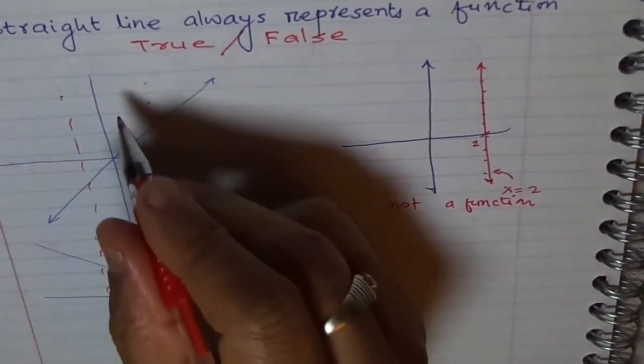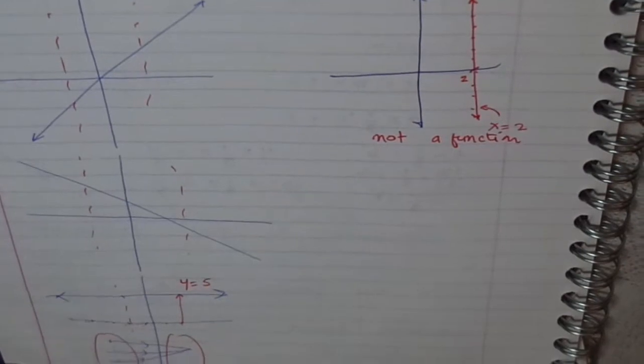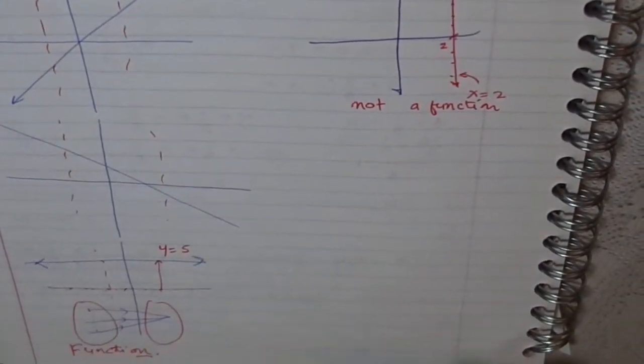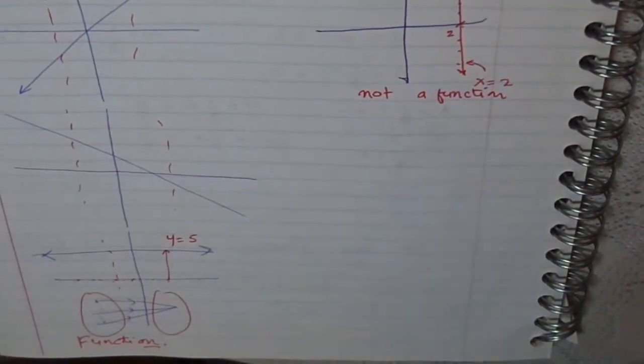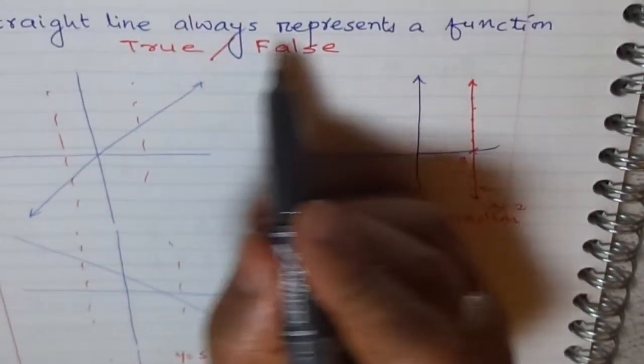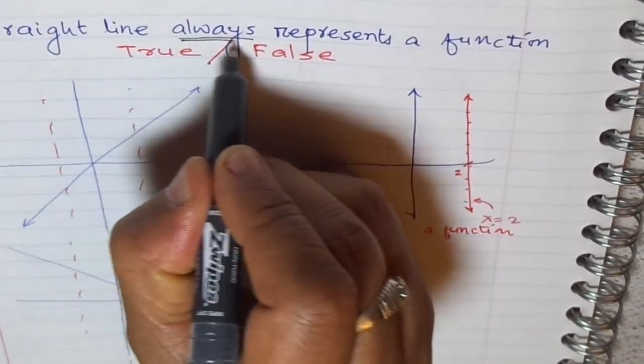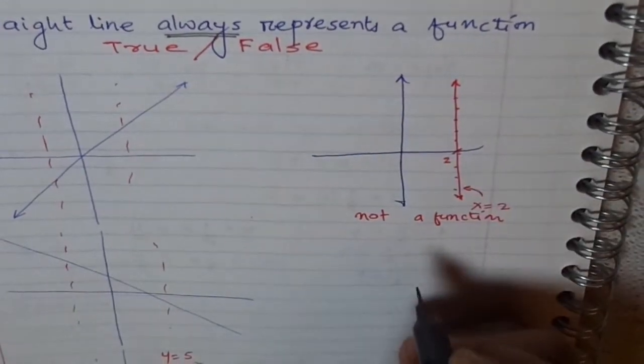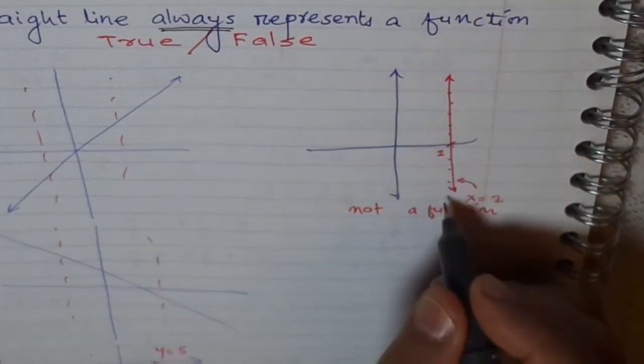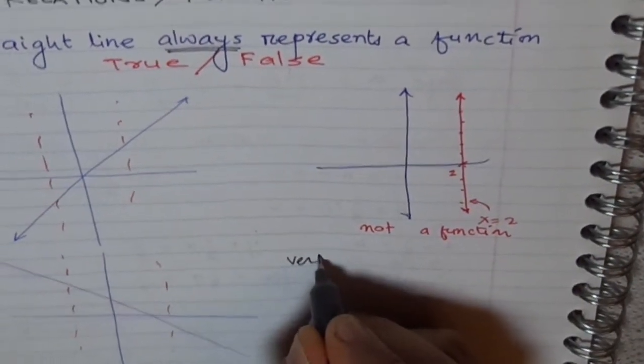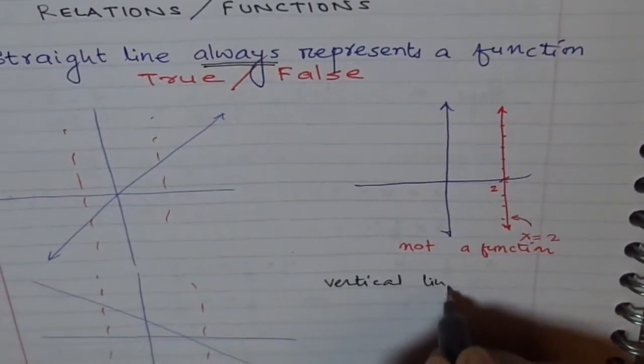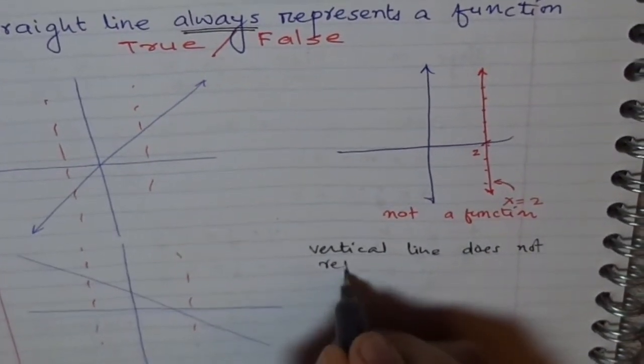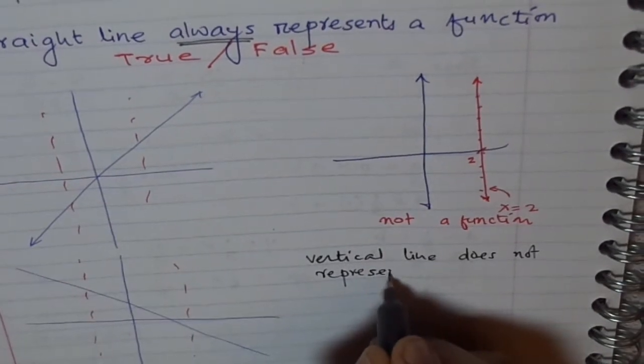However, all these cases represent functions. So a straight line always... no, not always. A straight line represents a function only if it is not vertical. So a vertical line does not represent a function.